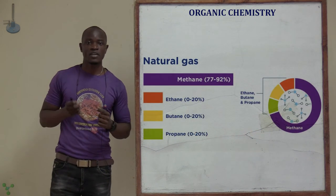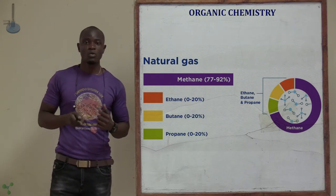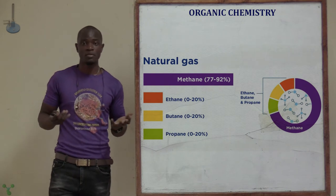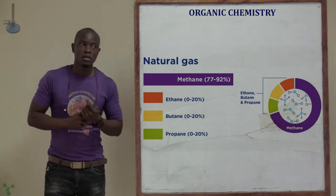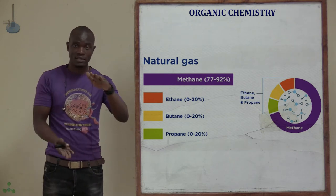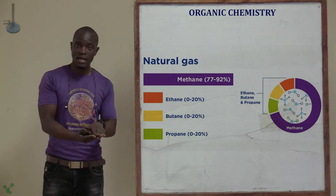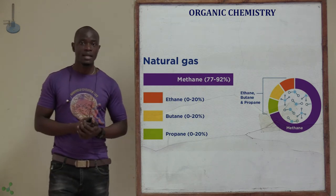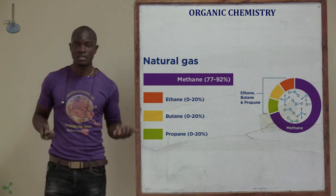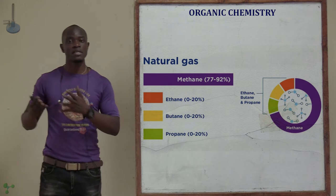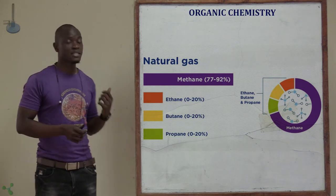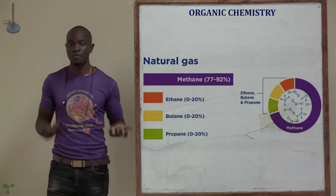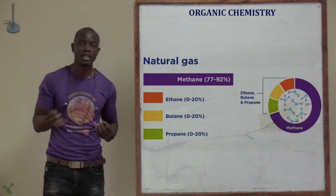Natural gas mainly consists of naturally occurring hydrocarbon gases — mainly methane, ethane, propane, and butane — basically the first four alkanes. The first four are gases, and the last six are liquids. Methane occupies the largest portion, about 77 to 92%, followed by ethane, then butane, then propane. So they can be obtained naturally from natural gas.